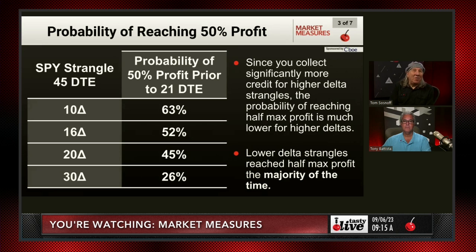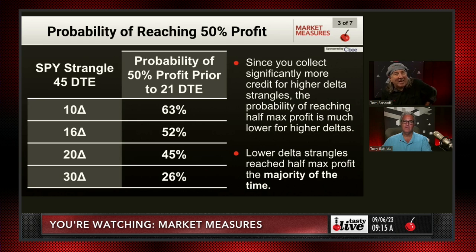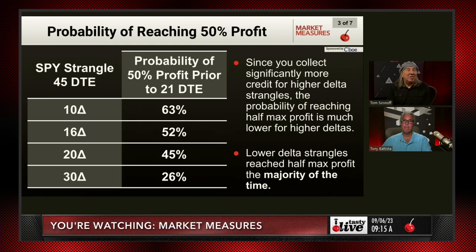The first takeaways: on the left-hand column you can see the SPY strangle at 45 days to expiration, and the probability of reaching 50% of max profit prior to 21 days to expiration — just the mathematical side. So 63%, 52%, 45%, and 26%. We usually live in the area of 16 to 20 deltas. That's why that 50% number prior to 21 days is so important to us, and that's why you want high IVR to start with, because that fits right into our models' range. We build our research and optimize around tasty mechanics — that 16 to 20 deltas and that 50% level. Since you collect significantly more credit for higher delta strangles, the probability of reaching half max profit is much lower for the higher deltas. But the lower delta strangles have reached half max profit the majority of the time.